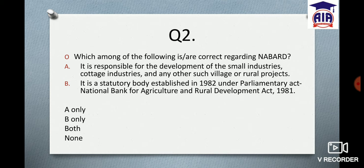Question number two: Which among the following is/are correct regarding NABARD? Statement one: It is responsible for development of small industries, cottage industries, and any other such village or rural projects. Statement two: It is a statutory body established in 1982 under the National Bank for Agriculture and Rural Development Act, 1981. Options: A only, B only, or Both. Type in the comments — this is a very important body.